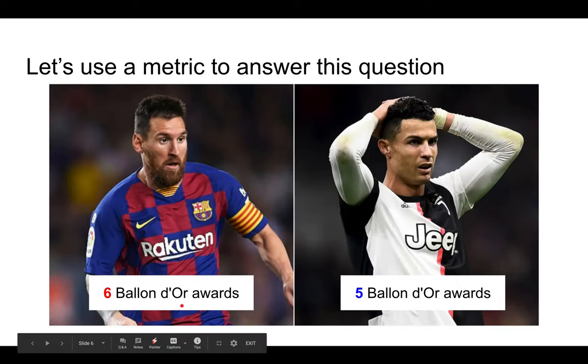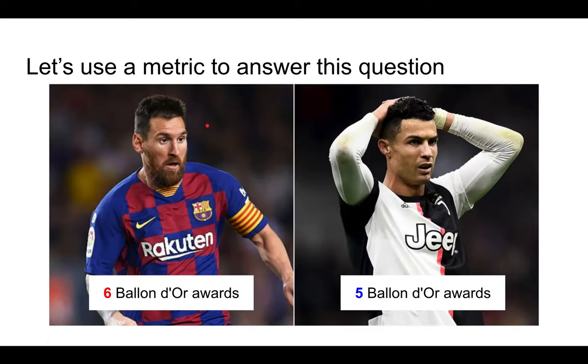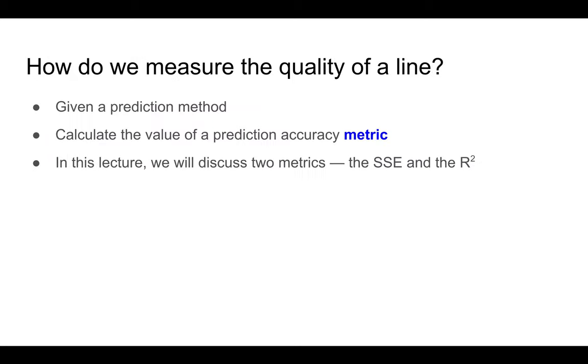Messi has six of these balloons and Ronaldo only has five. So if you use this metric to decide who is the best footballer, then Messi would be considered the best. Likewise, we're going to use different metrics to try to assess the quality of a line in terms of how well it fits the data. We'll be focusing on two metrics, the SSE and the R squared.